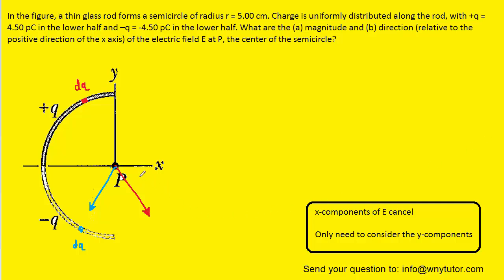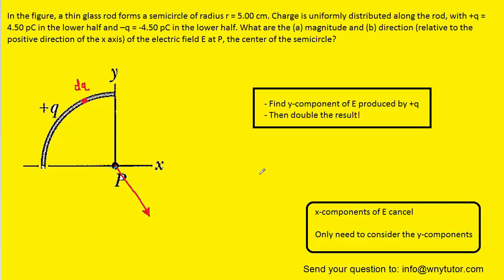We're also going to take advantage of the following insight. We can redraw the y-components of the red-colored electric field and the y-component of the blue-colored electric field. We can see that the magnitude as well as the direction of the y-component for the red electric field is the same as the y-component of the blue electric field. So we can focus on just finding the y-components of the red electric field, and then double it, because we'll have an equal contribution from the blue electric field. We've summarized that strategy in this box as a friendly reminder.